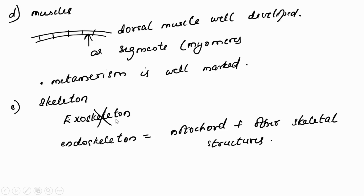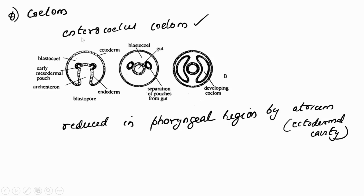Regarding skeleton: exoskeleton (outside hard structures) is totally absent in Cephalochordata. Endoskeleton is present, composed of notochord and other skeletal structures. Regarding coelom: it is not a true coelom but an enterocoelom. The coelom forms first as two pouches emerging from the enteron. These are called mesodermal pouches, which later pinch off and develop into the coelom.